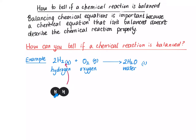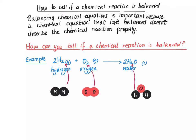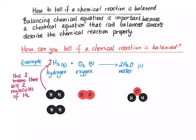If we draw out each molecule to show each element: on the left side we have two hydrogens because there's a little two there. We have two oxygens because of the little two there. Then we have H₂O — H followed by a little two and one O. That little two means there are two hydrogens, and the O means there's one oxygen.